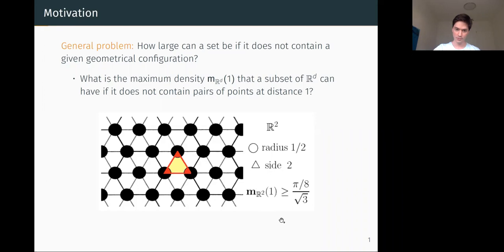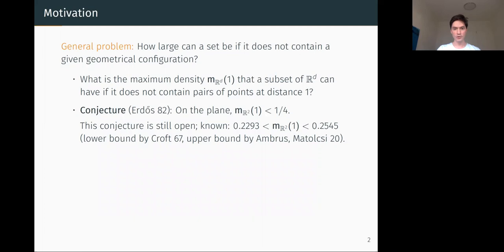There is an old conjecture of Erdős from 1982 that this extremal density on the plane is less than one fourth, meaning any measurable set covering one fourth of the Euclidean plane will necessarily have two points at unit distance. Despite a lot of study on this, the conjecture is still open, but we have some good bounds.